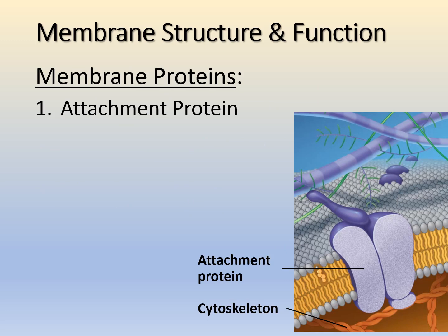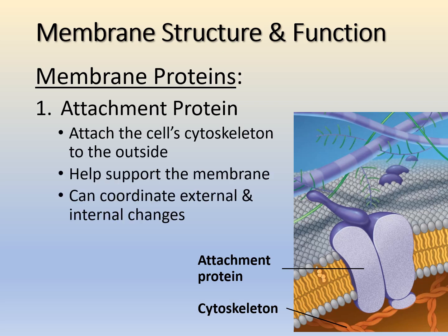Now let's go through the membrane proteins in the phospholipid bilayer. The first type is the attachment protein, which attaches the cell's cytoskeleton to the membrane. Remember those fibers inside the cell that give it structure — the attachment proteins connect to those cytoskeletal fibers to support the membrane. They can also help coordinate changes between the external and internal environment, but their main function is attachment to the cytoskeleton.